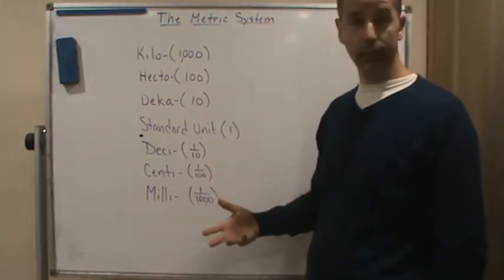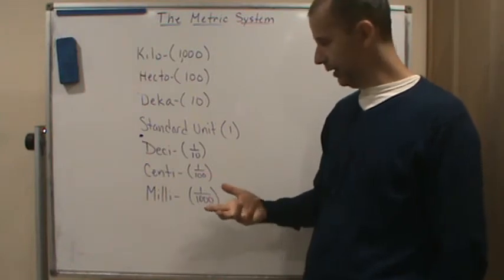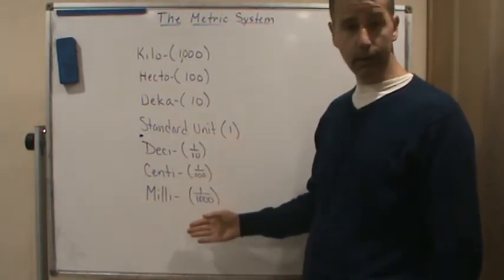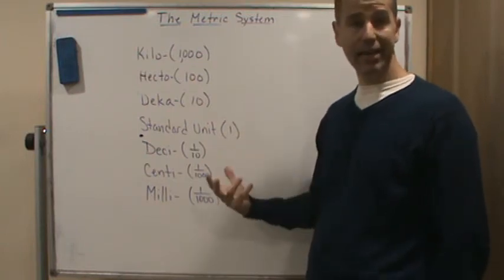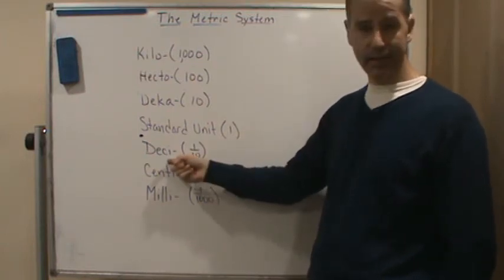Now if we want to go smaller by powers of 10, we're going to be dividing by powers of 10. So if we're talking about grams and I am talking about one-tenth of a gram, that's a decagram.